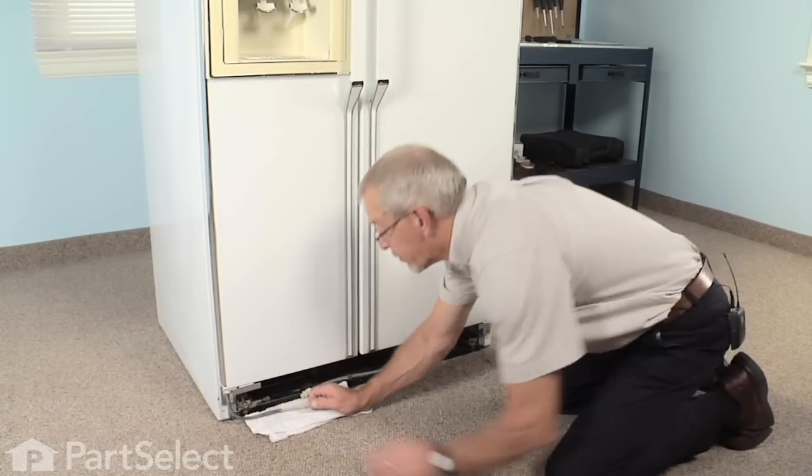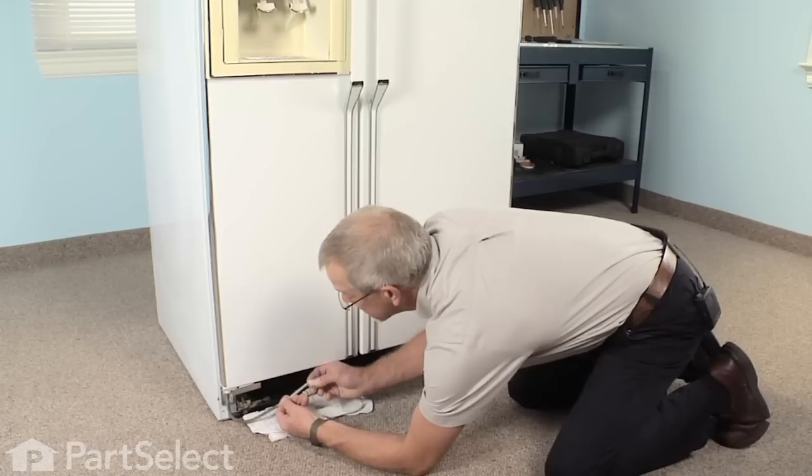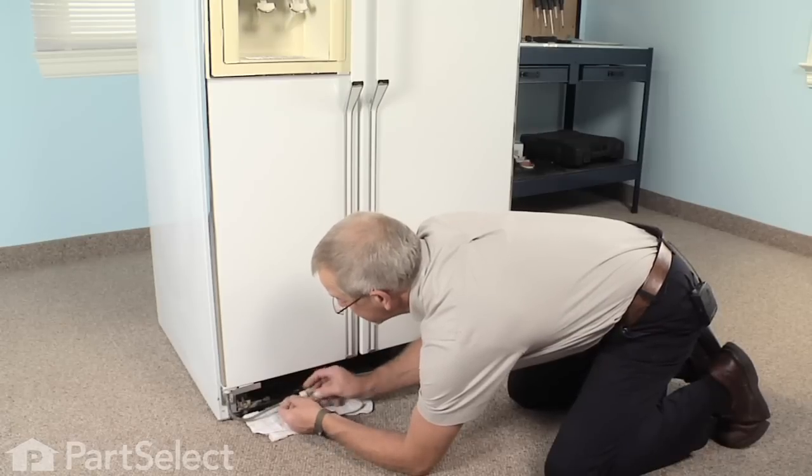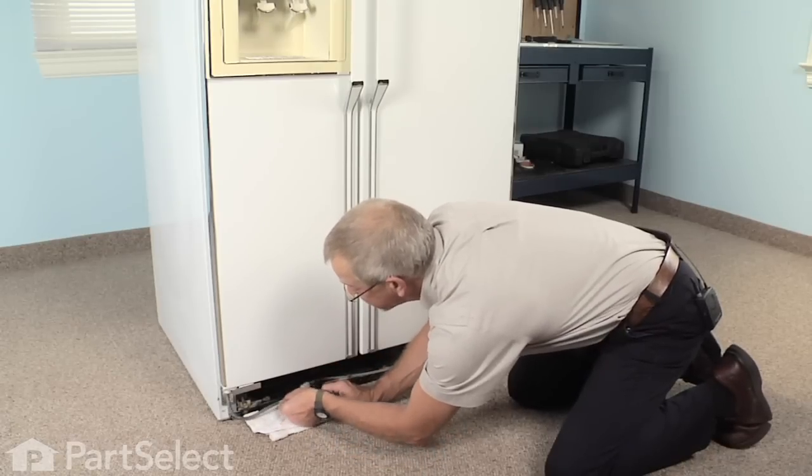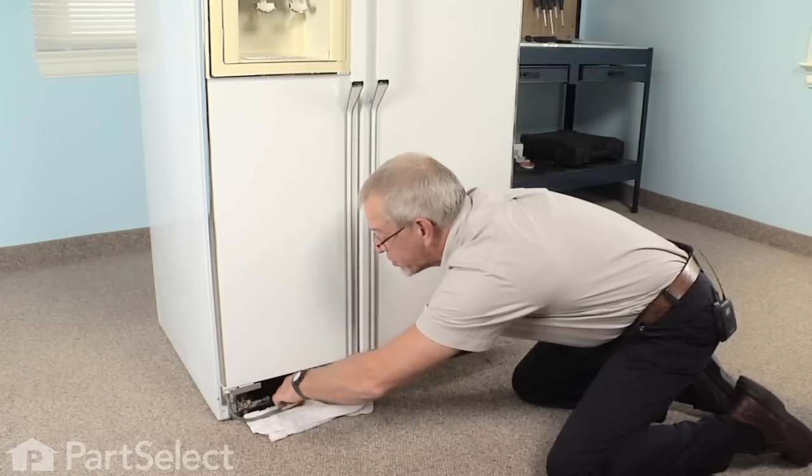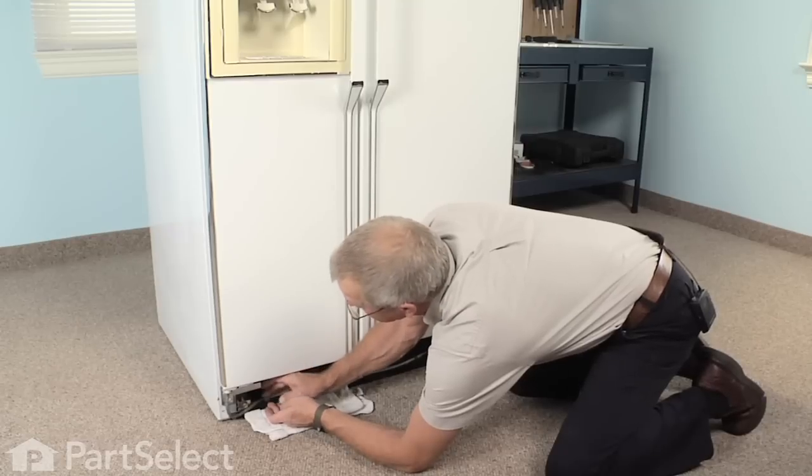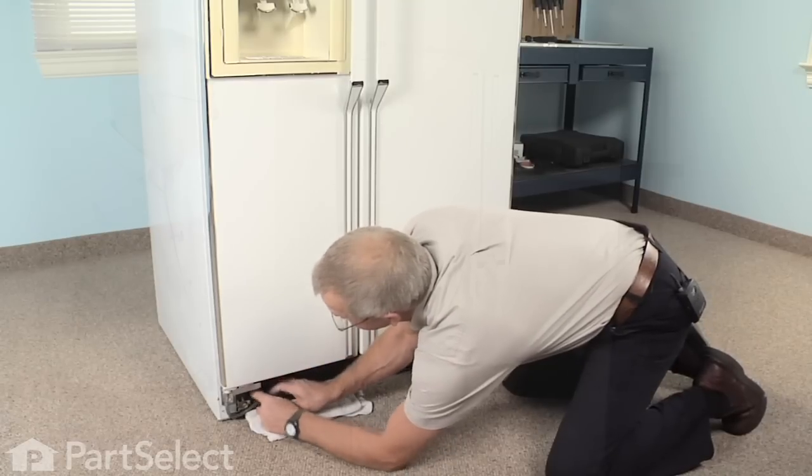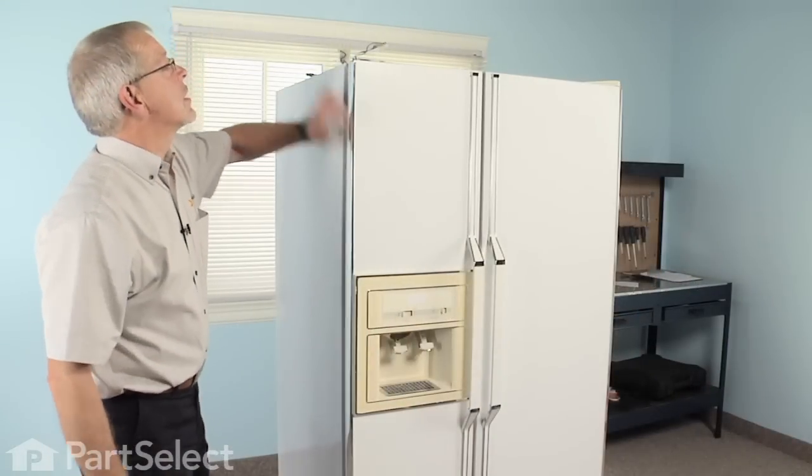With the door back in place, we're now ready to reconnect the water line. Slide the nut back onto the tubing, push the tubing all the way into the union, tighten the nut making sure that we don't cross-thread it. Clip it back into the retaining clip.